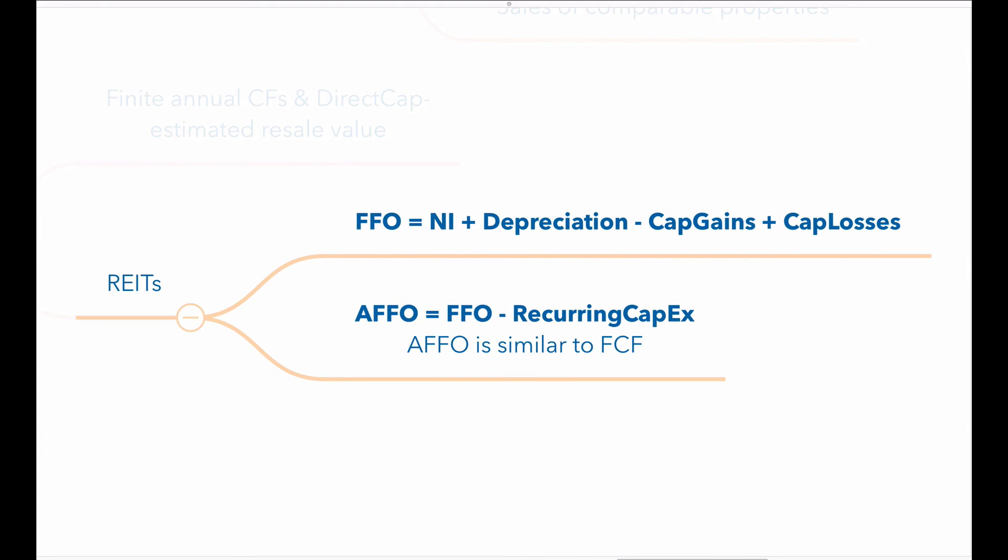Income-based approaches, when it comes to REITs, use two common measures as a cash flow proxy. These are funds from operations or FFO and the adjusted funds from operations or AFFO. FFO in its most basic form equals net income plus depreciation, less capital gains, plus capital losses from sales. AFFO adjusts the FFO for recurring capital expenditures and is similar to a free cash flow measure. So you subtract recurring capital expenditures from the FFO to arrive at the adjusted FFO or AFFO.